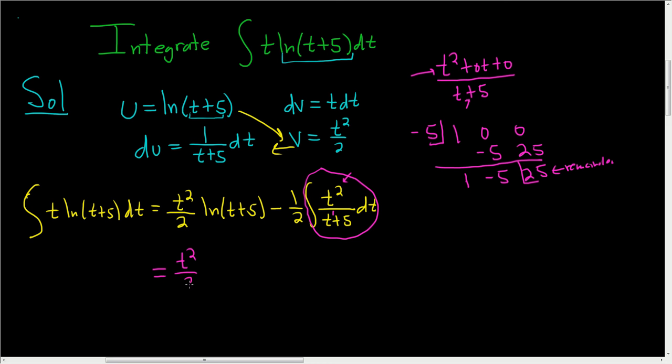And so we can go back to the original problem now and rewrite everything. This is t squared over 2, the natural log of t plus 5, minus, and then we have the 1 half, and I'm going to use a bracket, and so this here can be written as t minus 5. I'm getting that from here, right, 1 times t minus 5. So we have that integral. So the integral of t minus 5 dt, and then plus the remainder, so the remainder was 25, over the divisor, so t plus 5. And then we have the dt.